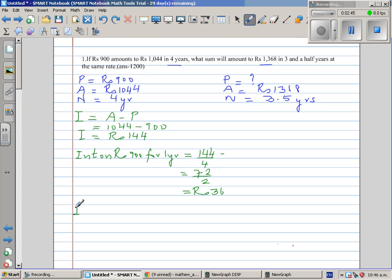Now let's ask the question: what's the interest on 100 for one year? This 36 is the interest on 900 for one year. So the interest on 100 for one year would be 36 divided by 9 which is 4. So the rate of interest is 4%. In other words, the rate at which 900 becomes 1044 is 4%.